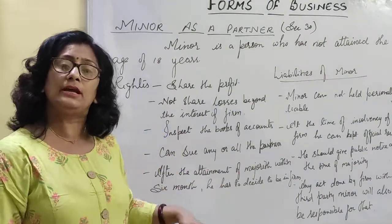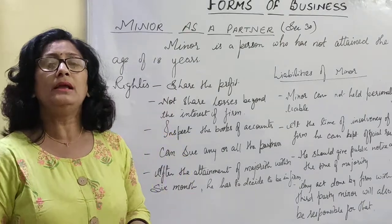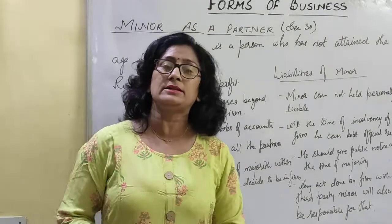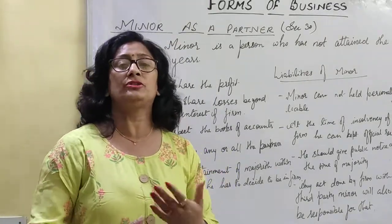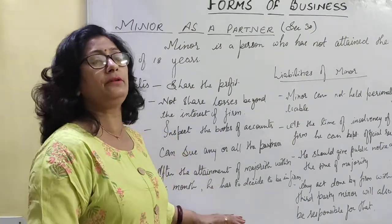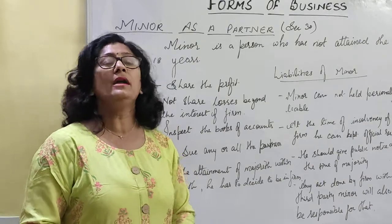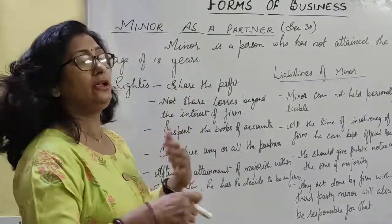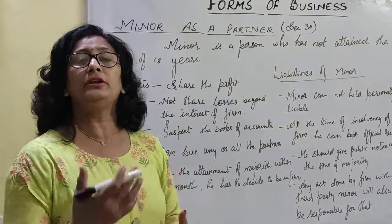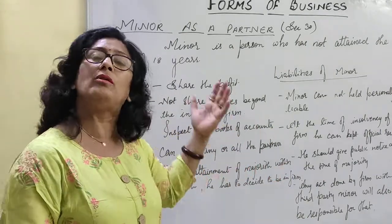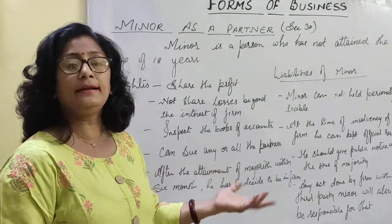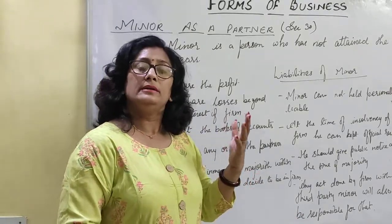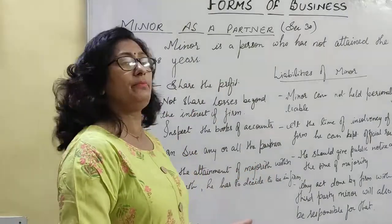Agar wo chhodna chahata hai, toh apna share, woh normal exit of partner ki tarah hoga. Agar wo isme rehna chahata hai, toh he should seek admission as a regular partner in the same way. In that case, he is no longer treated as a minor — he will be treated as major, and he will also share the losses; liability will be unlimited. Until the attainment of majority, the minor is a beneficiary only — minor hamesha beneficiary rahta hai.